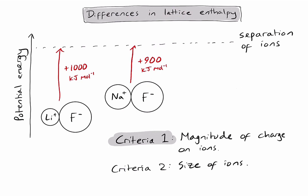Let's look at the second criteria. Well, in my diagrams I can see that lithium ions are smaller than sodium ions, and I could check this in the data booklet by looking at the ionic radius. So why is a smaller ion going to be more stable in an ionic lattice?